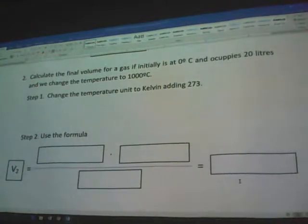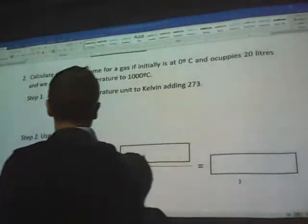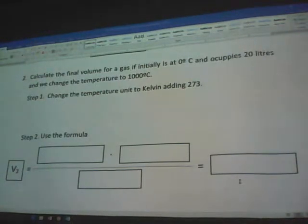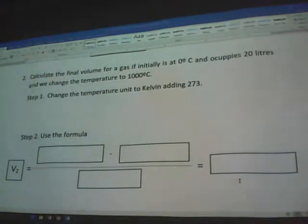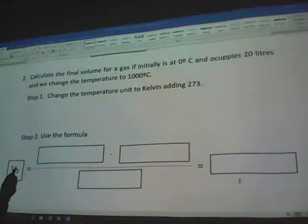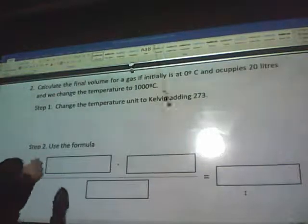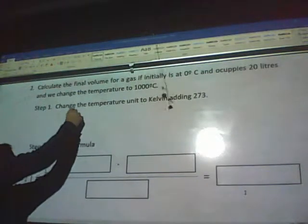Calculate the final volume of a gas that initially is at zero degrees Celsius and occupies 20 liters, and we change the temperature to a thousand degrees. First, we have to change the temperature to Kelvin. We add 273, so you have 273 and 1,273.